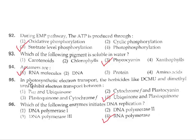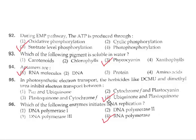Question 95: In photosynthetic electron transport, herbicides like DCMU and dimethyl urea inhibit electron transport. So the correct answer is option 4.